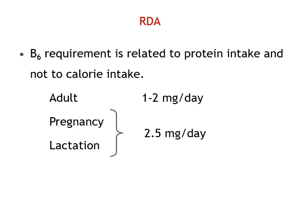The recommended dietary allowance, or RDA, of pyridoxin is related to protein intake and not to calorie intake. This is because the majority of PLP functions are related to protein metabolism — most enzymes responsible for protein metabolism require PLP as a coenzyme, while its role in carbohydrate metabolism is minor. For an adult, 1 to 2 mg per day is required, and for pregnancy and lactation it is 2.5 mg per day to meet fetal growth.